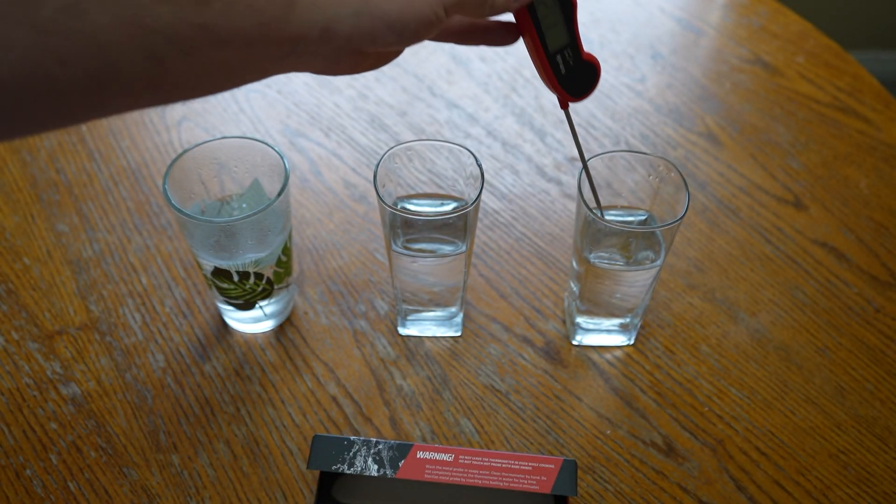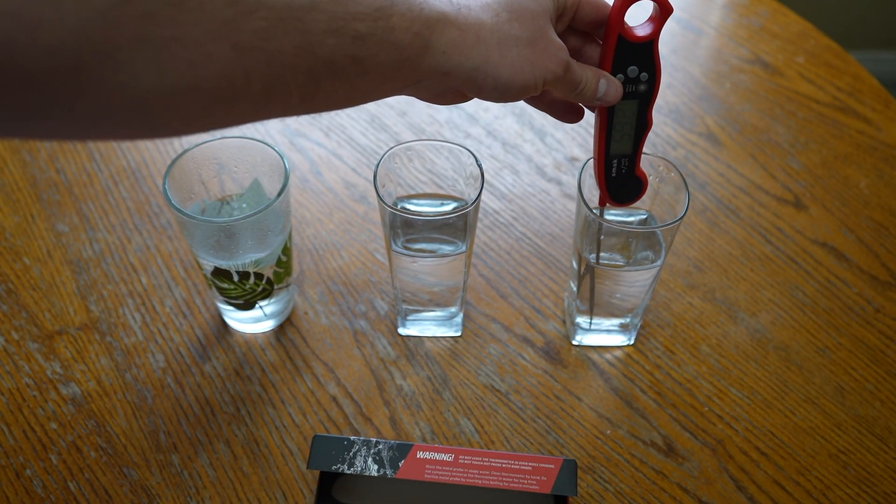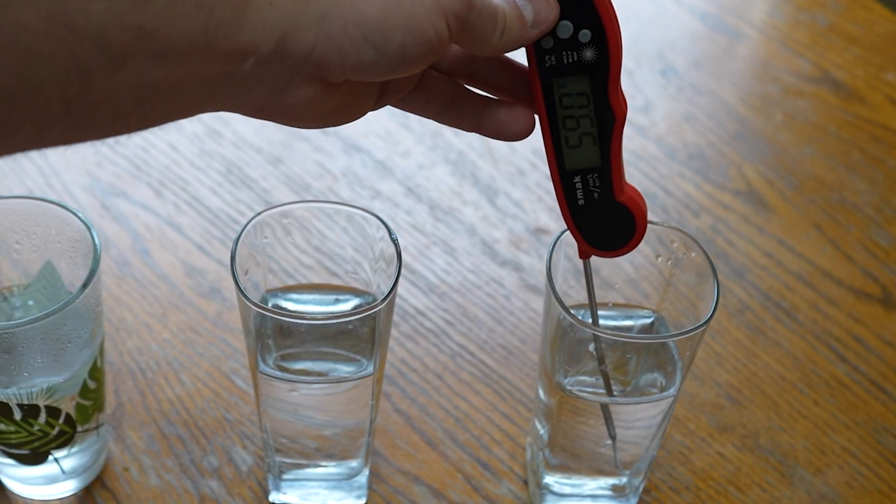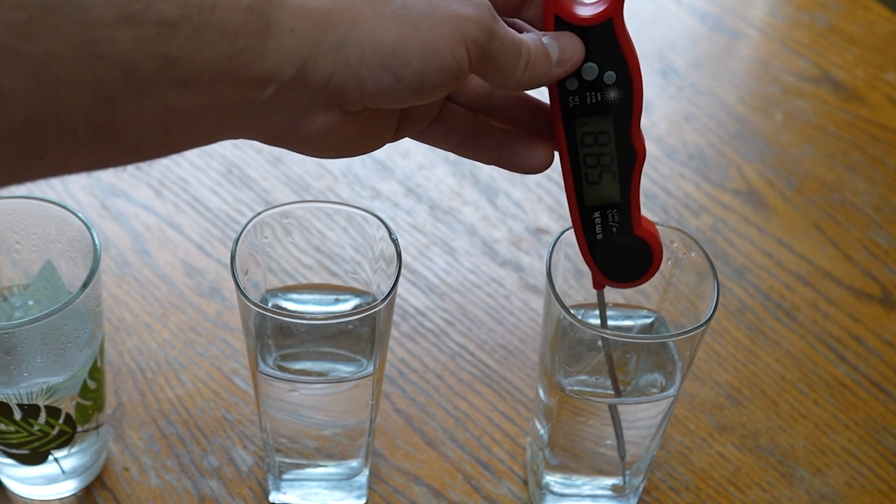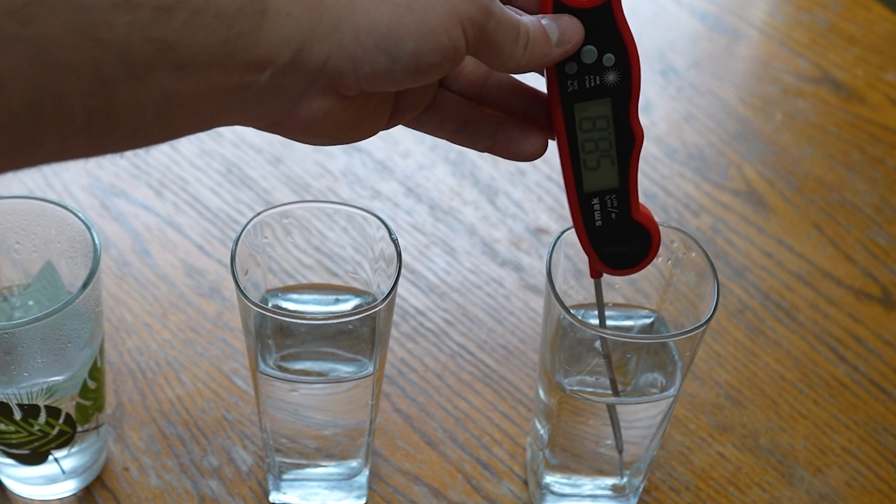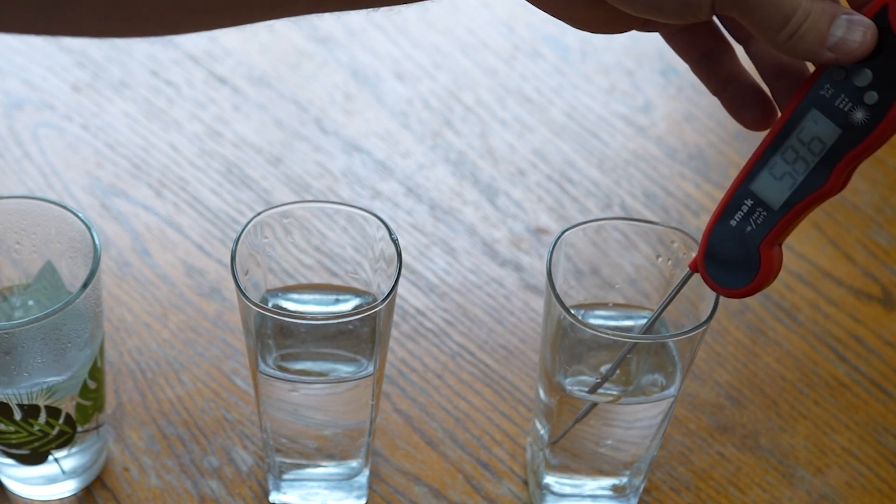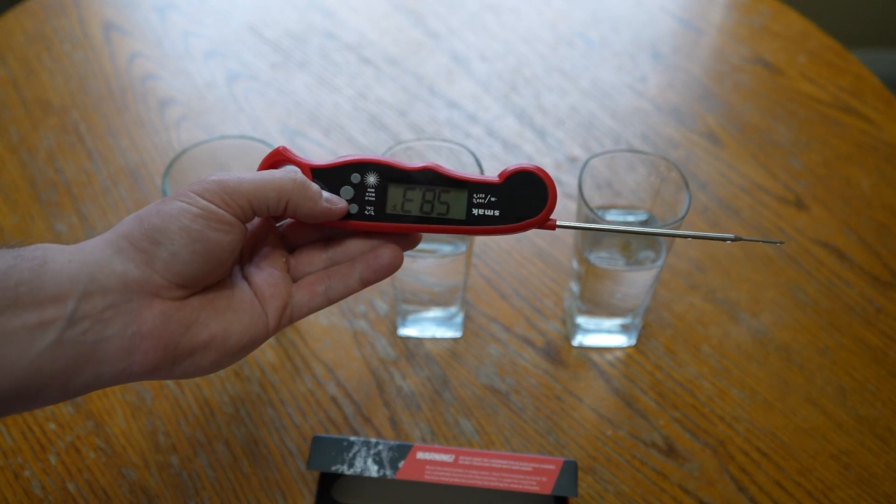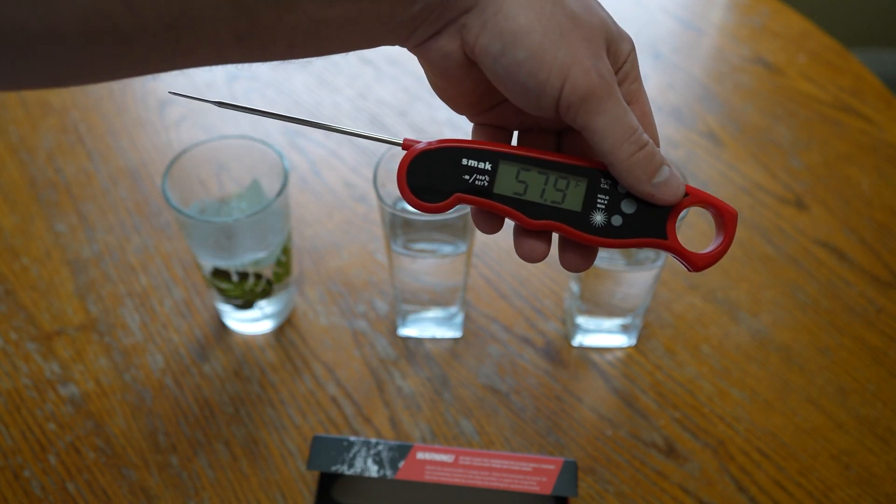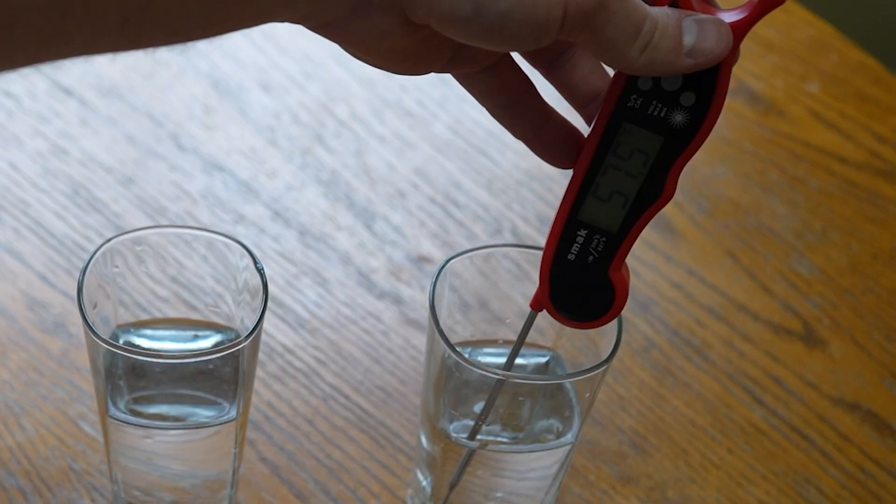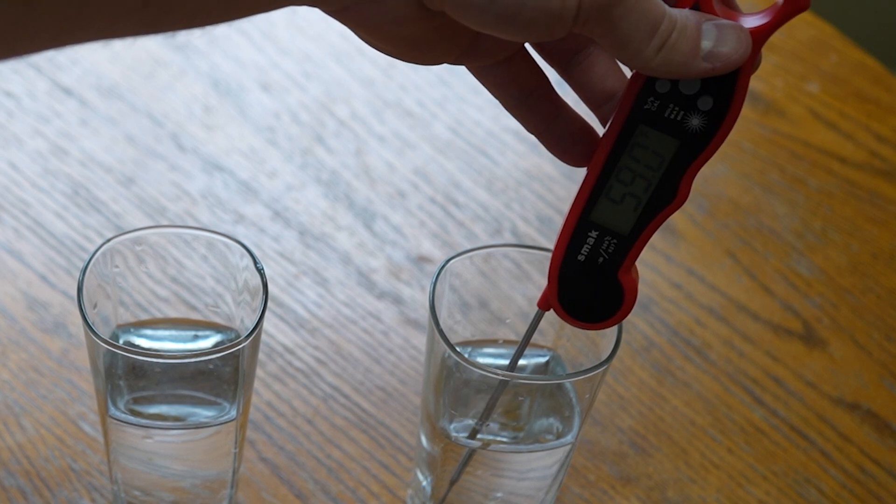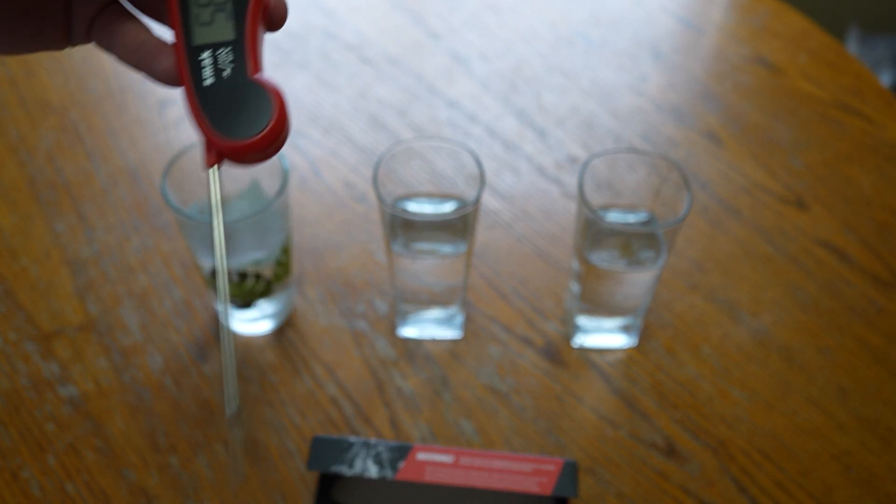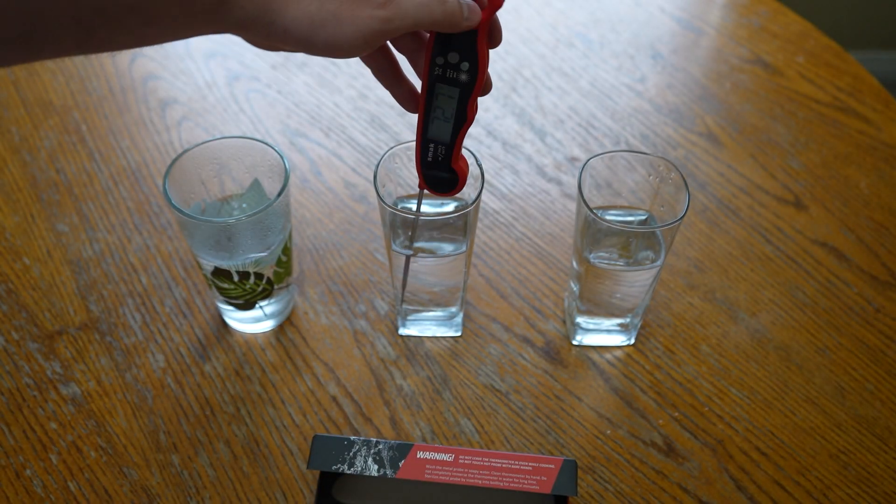So right now our cold water is reading at around 8 degrees Fahrenheit roughly is what it looks like, 8.85. And I would say that's probably pretty accurate to what we're reading there. Oh no, there we go. Sorry, it's reading at 59. I was reading that backwards. It's around 59. Now let's move on to our room temperature water.